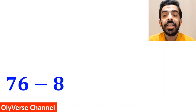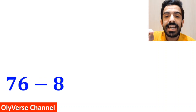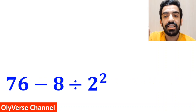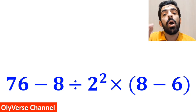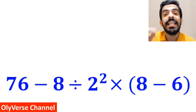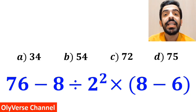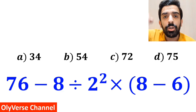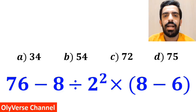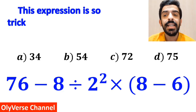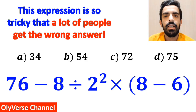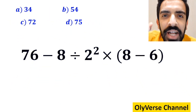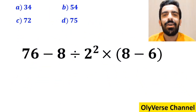What is the value of the expression 76 minus 8 divided by 2 to the power of 2, multiplied by open parenthesis 8 minus 6 close parenthesis? Which option do you think is the correct answer to this question? This expression is so tricky that a lot of people get the wrong answer. Let's dive in and break it down step by step together.